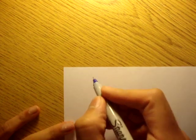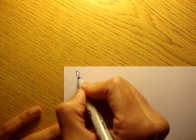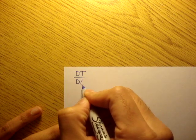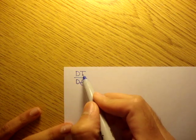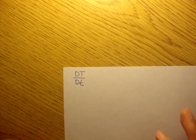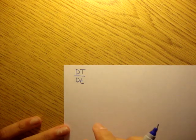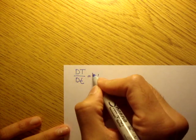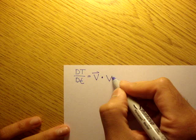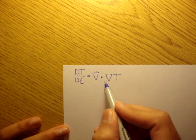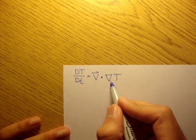So the material derivative is usually denoted DT/Dt. This big uppercase T is temperature. It's the example we'll be doing in this video, so I just used temperature. And that's equal to v times del T, right? Our velocity dotted with the del operating on T.